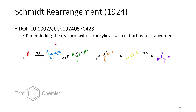The next reaction is the Schmidt rearrangement. This one probably won't interest too many of you as it uses hydrazoic acid. It doesn't work with azide on its own — you need azide in the presence of an acid, usually sulfuric acid. The azide can attack because several resonance forms allow it to displace hydroxide as a leaving group in a zwitterionic fashion. This then gives a nitrilium, which is similar to the Baeyer-Villiger but with hydrazoic acid, and which can then undergo hydrolysis to afford the amide.